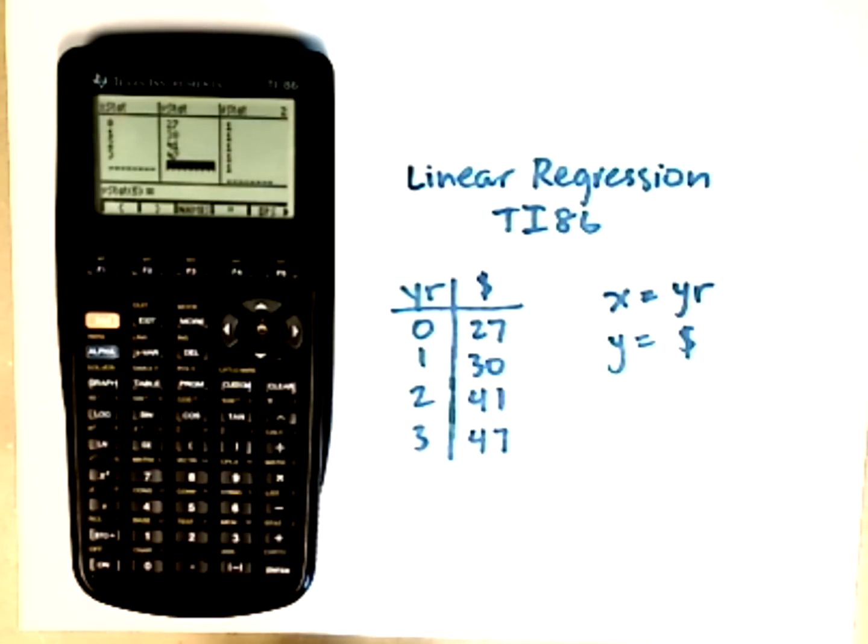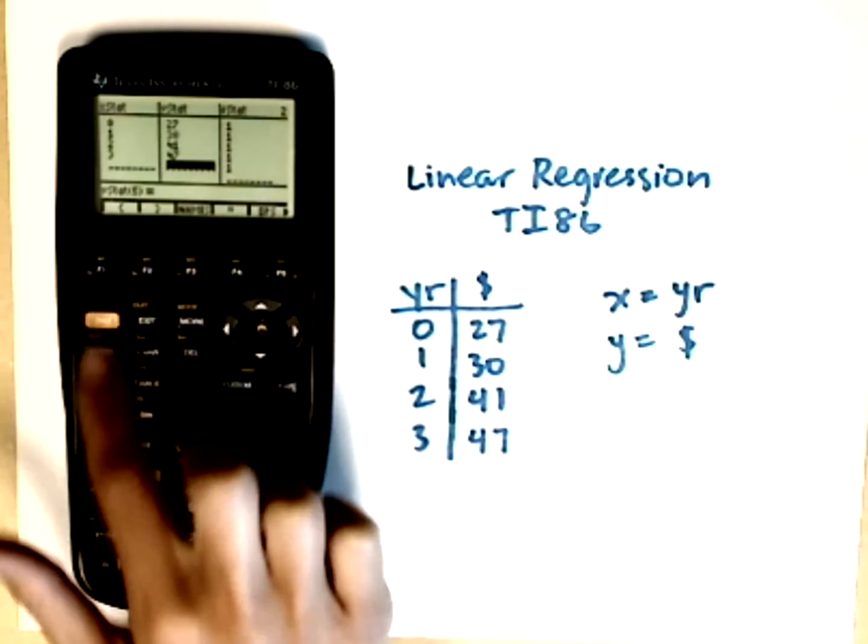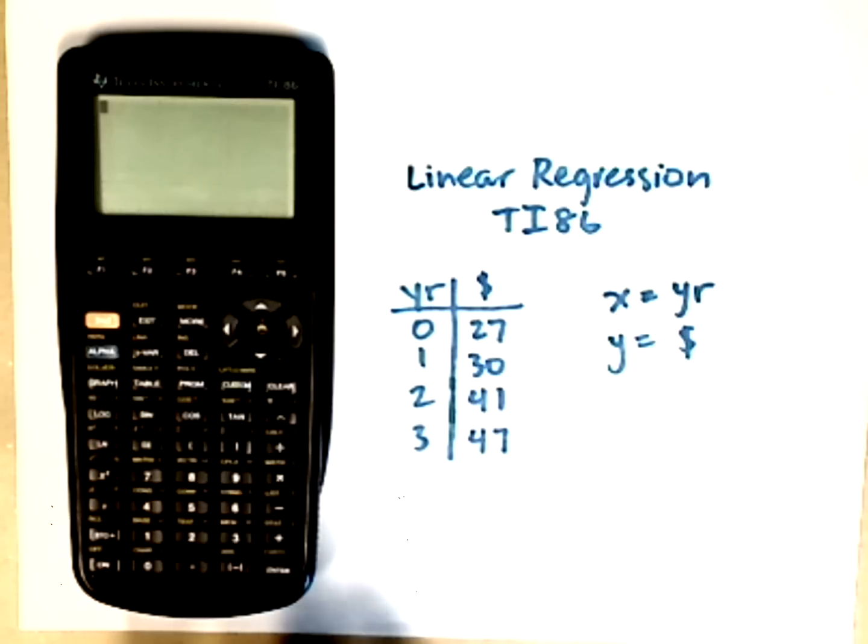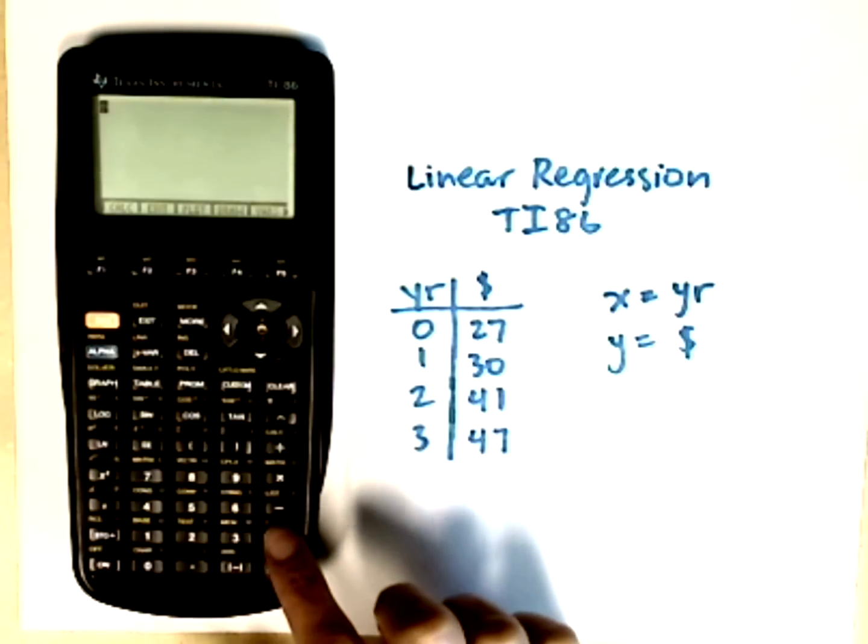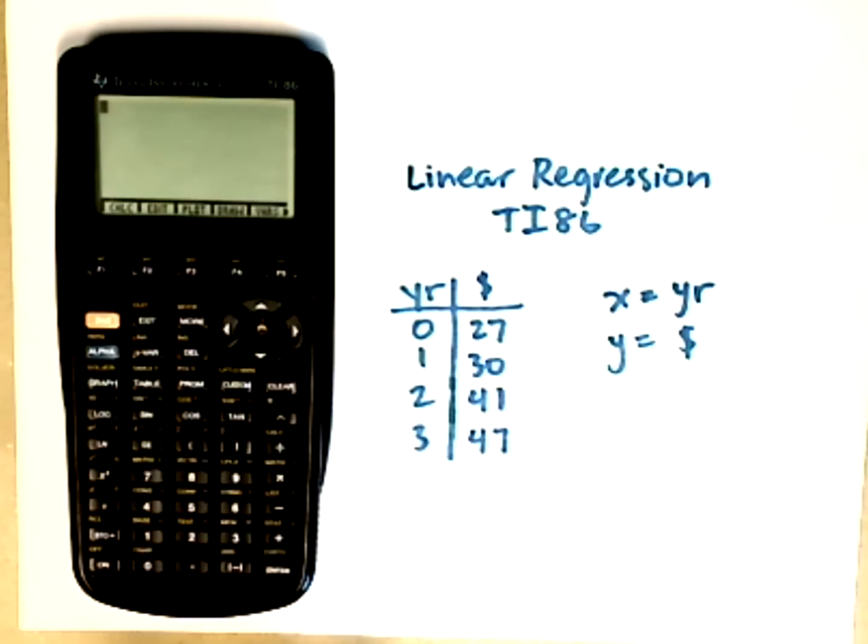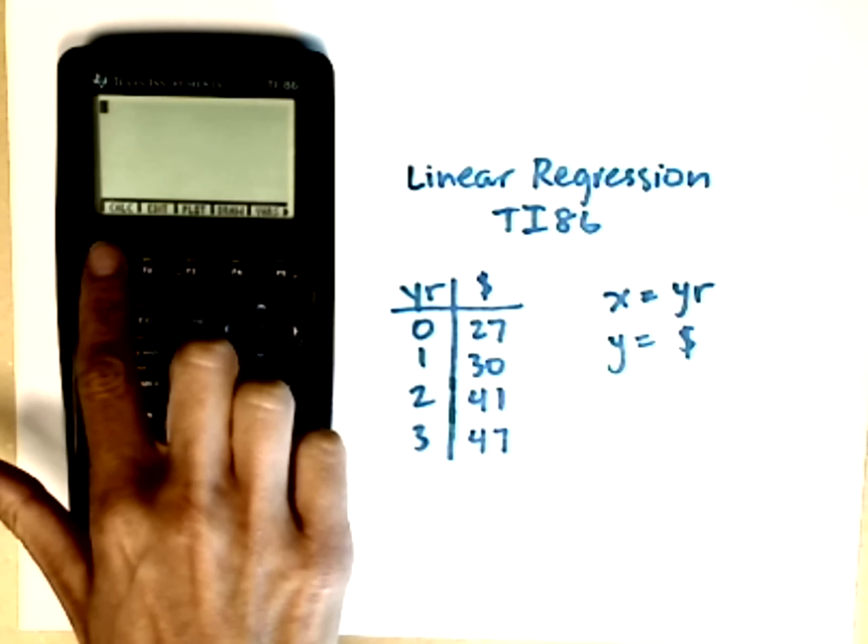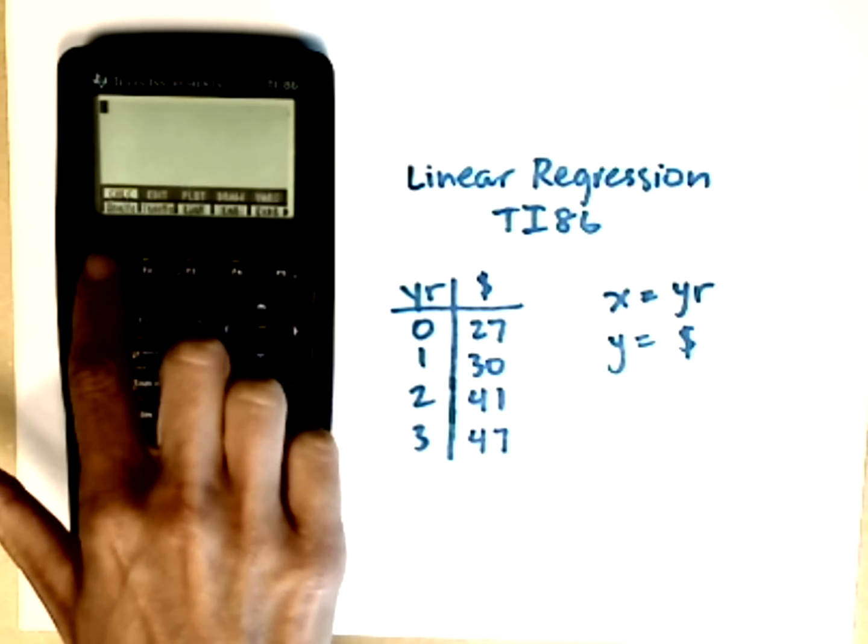Now I'm ready to leave the table and ask the calculator to compute a linear regression. I'm going to hit exit, and I'm going to go to the stat menu, which is right below the list menu. I hit second, stat, to access the stat menu.